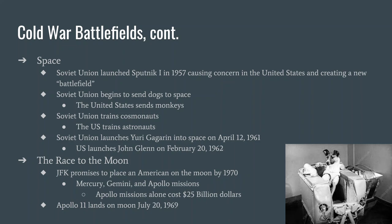For Sputnik 2, the Soviet Union sent a dog named Laika into space — a stray dog found on the streets of Moscow. They trained her to eat while in space and stress-tested her. It's not a happy ending. In response, the United States sent monkeys, and these monkeys survived and came back. One of the monkeys is actually preserved and stuffed and located in the Smithsonian Institute Museum in Washington, D.C.